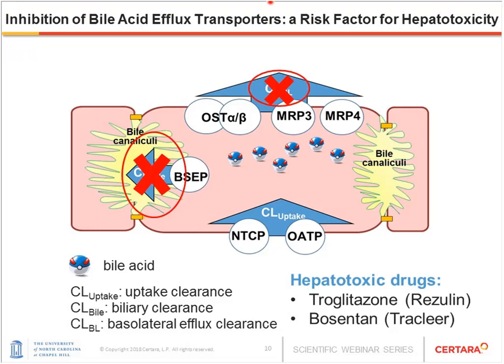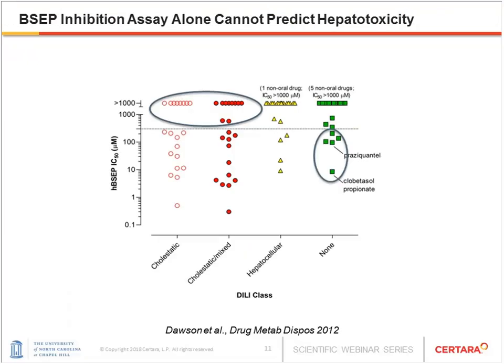Two classic examples are troglitazone, which was withdrawn from the U.S. market, and bosentan, which has received a black box warning. These two compounds turned out to be clean in preclinical species such as rodents, partially because the uptake transporter NTCP is inhibited more potently in rodents than in humans, so hepatic accumulation of bile acids is less intense. Simultaneous inhibition of uptake transporters might explain why some inhibitors of the biliary transporter BSEP are not toxic. However, some cholestatic compounds are not BSEP inhibitors, meaning they might be inhibiting other transporters and leading to cholestasis.